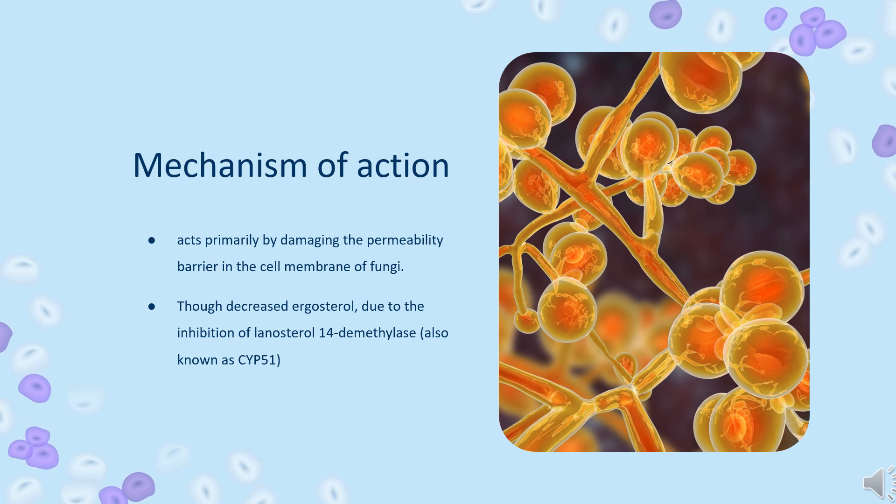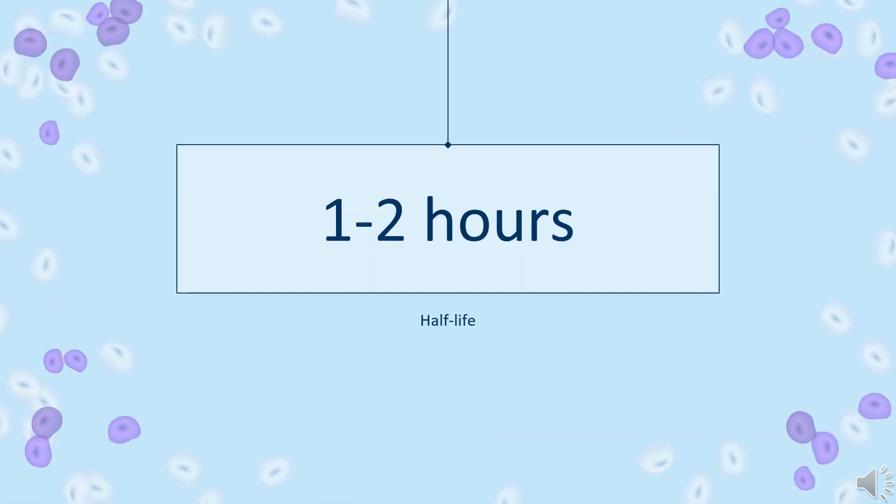The disruption in production of ergosterol disrupts the cell membrane and causes holes to appear. The cell membranes of fungi are vital for their survival — they keep unwanted substances from entering the cells and stop the contents from leaking out. As bifonazole causes holes to appear in the cell membranes, essential constituents of the fungal cells can leak out, killing the fungi. Half-life: one to two hours.